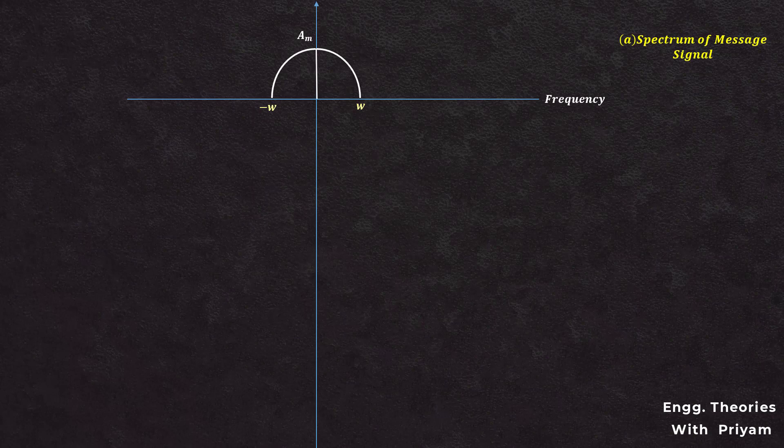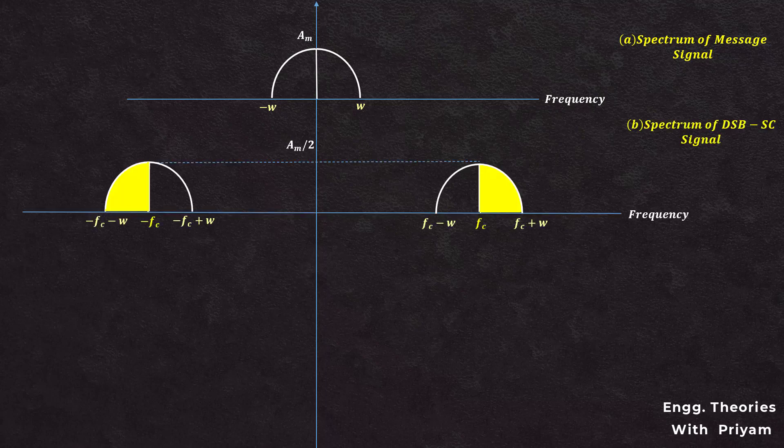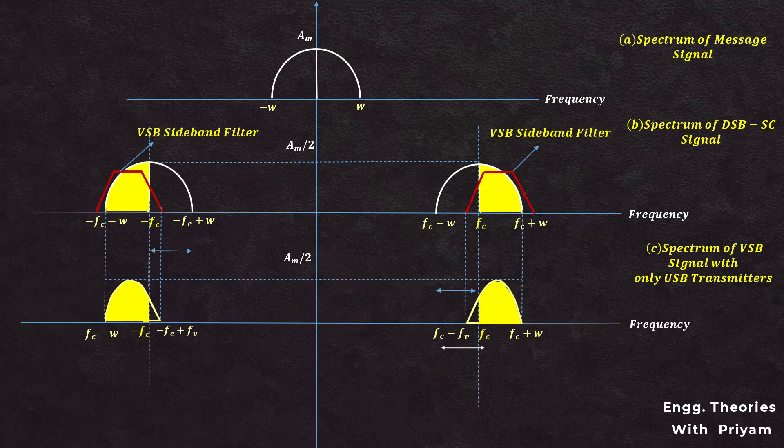Now let's see the generation of the VSB modulated signal graphically. The message signal spectrum spans from −W to +W with center frequency fc. The VSB modulated signal spectrum is generated from this. If we want to transmit the upper sideband and a vestige of the lower sideband, the VSB sideband filter should have a corresponding response. The portion from fc−fv to fc is the vestige of the lower sideband.